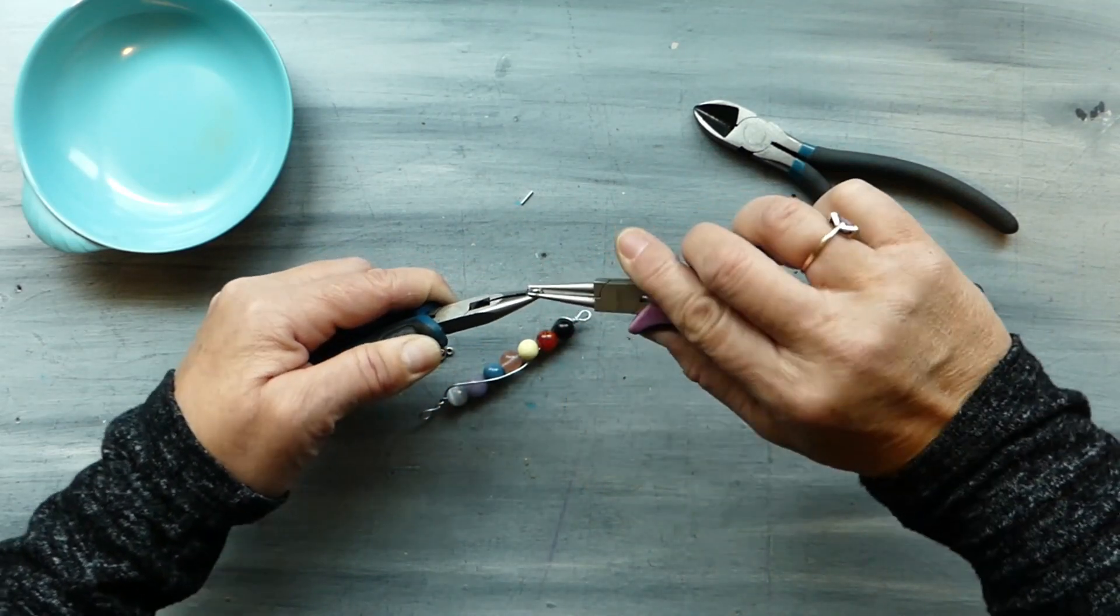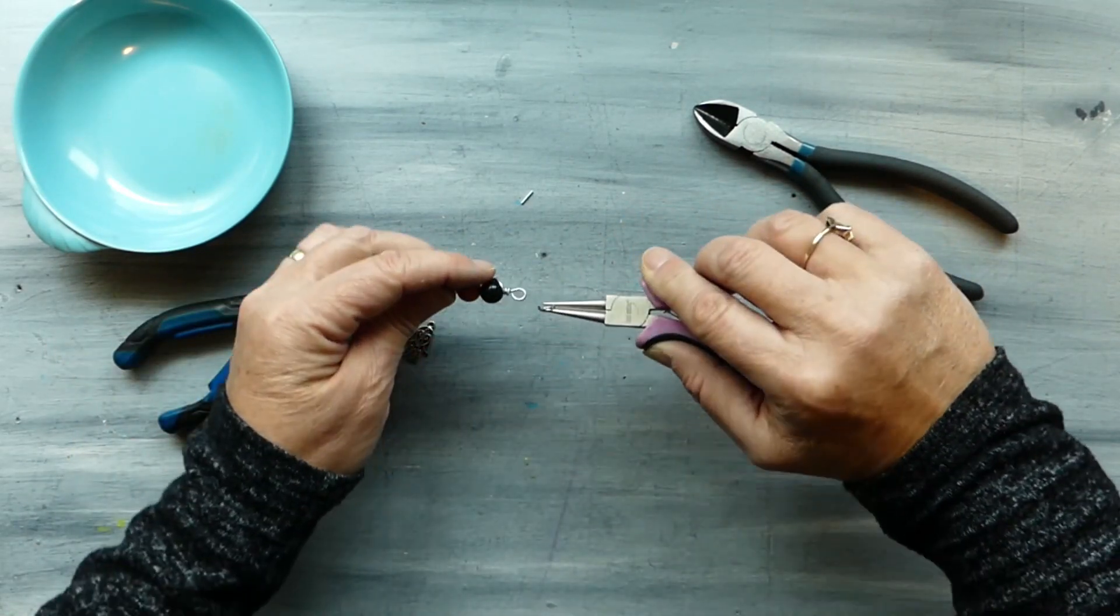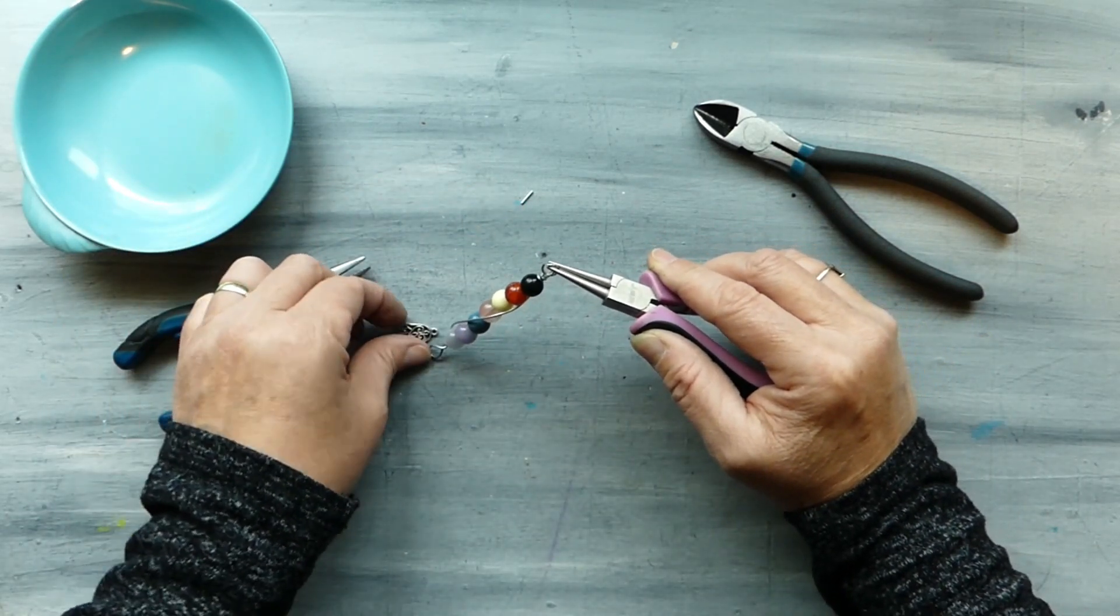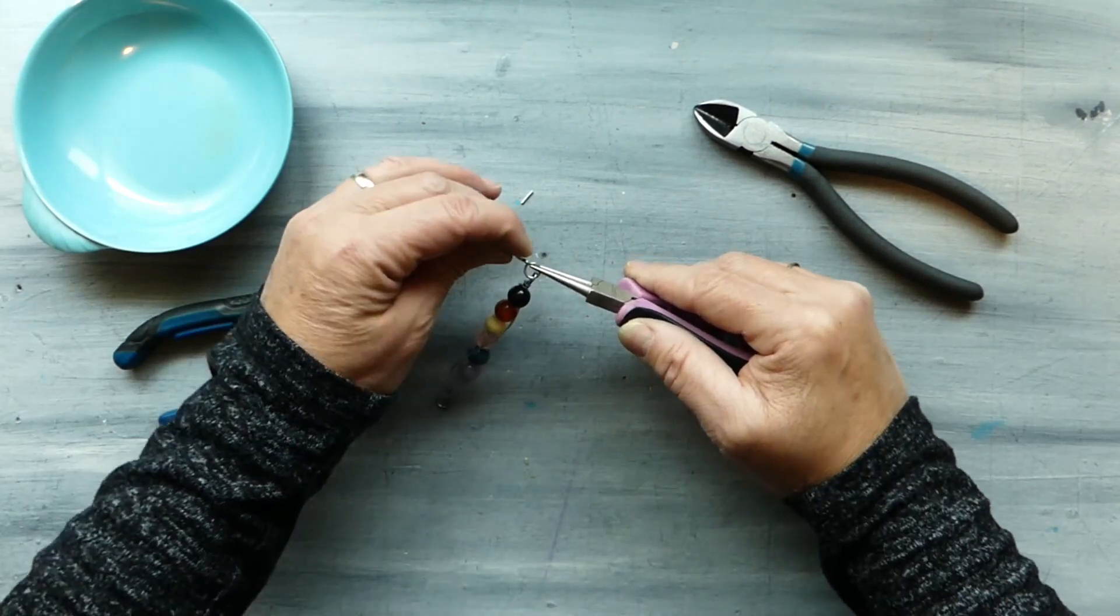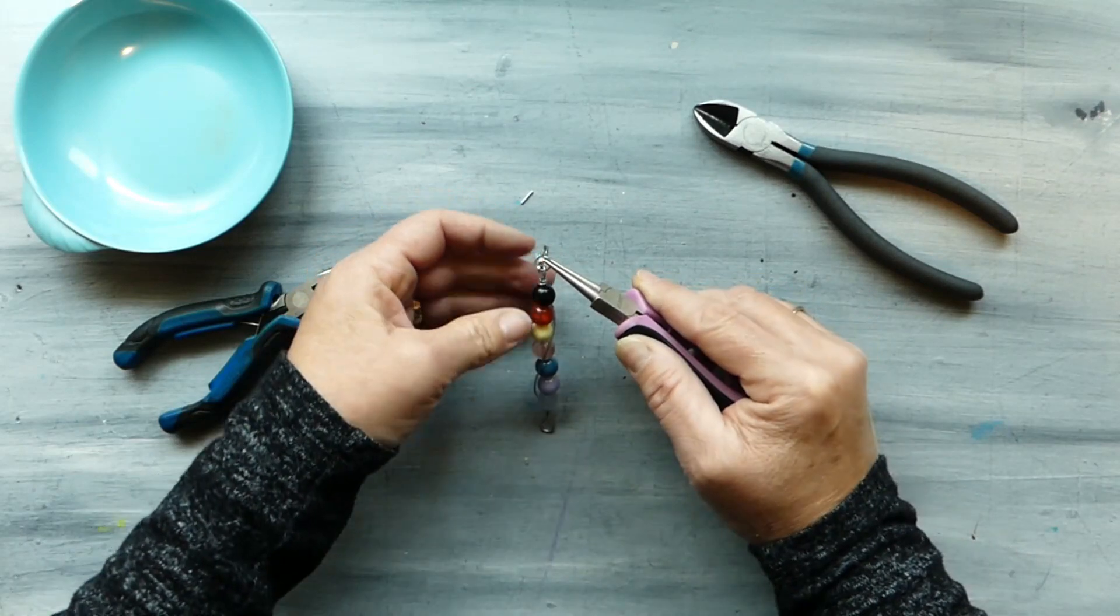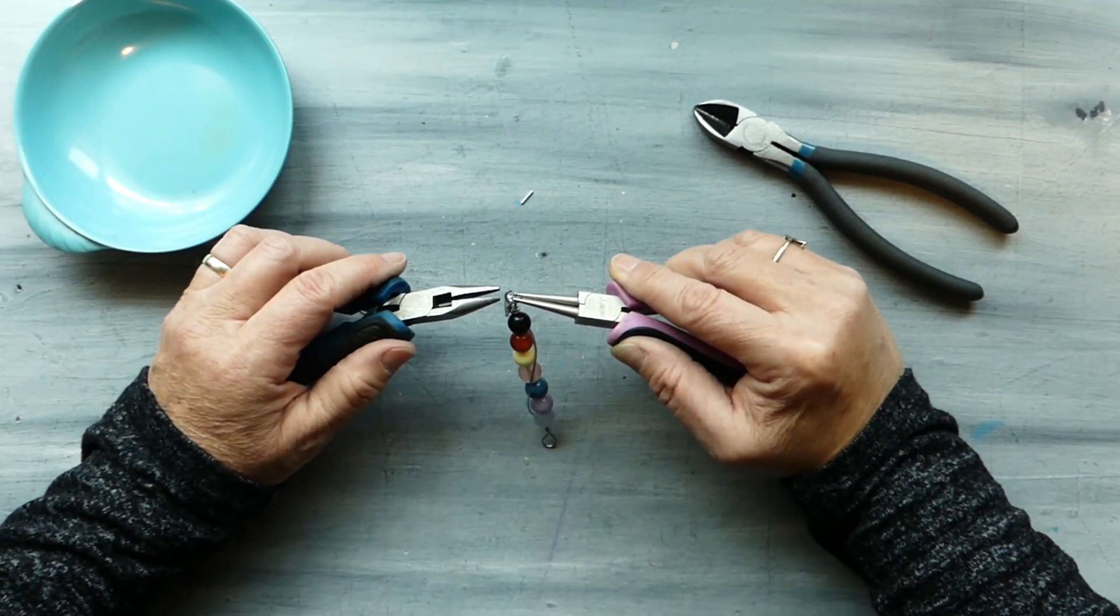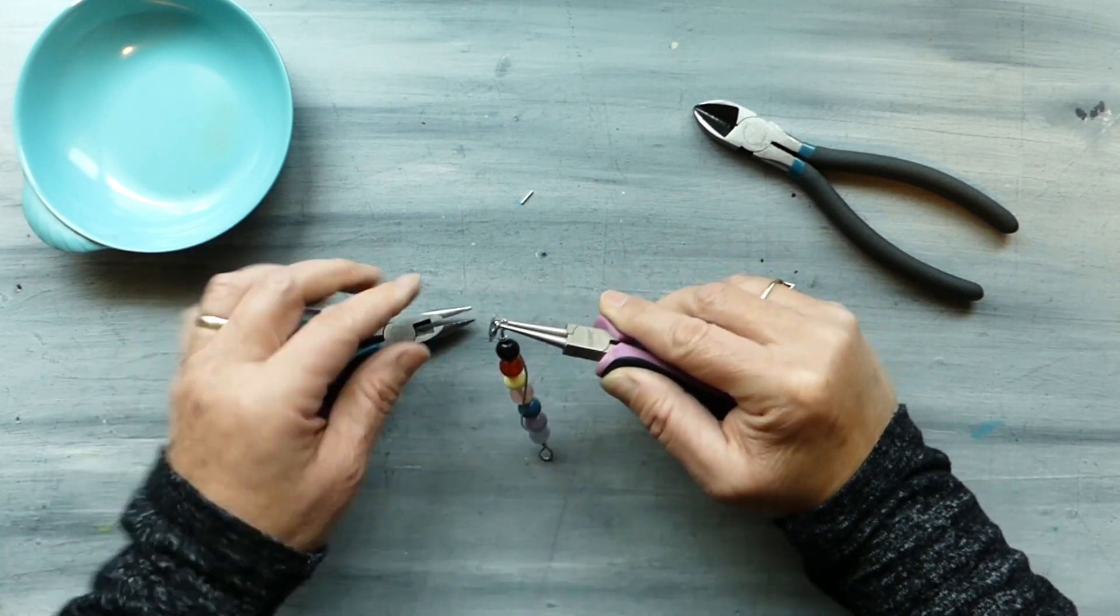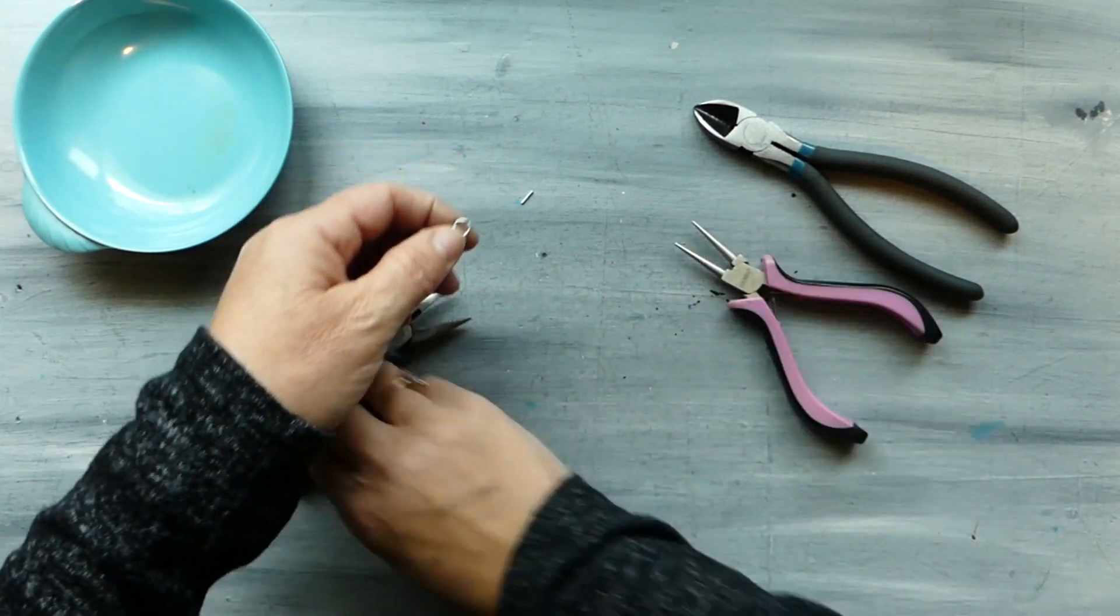All right so now we're going to take our chakra key ring, we pop our loop there and then we grab our charm hang it on there as well. Taking our second pair of pliers once again, move those wires into place and then we just give a squeeze.